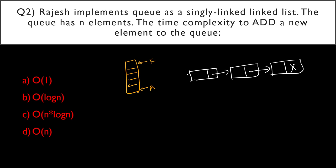We can implement queues using a linked list in two ways — similar to how stacks are implemented. We can place the front at the head and the rear at the tail. Every time we want to insert a new element we come to the rear end and insert, which takes traversal time.